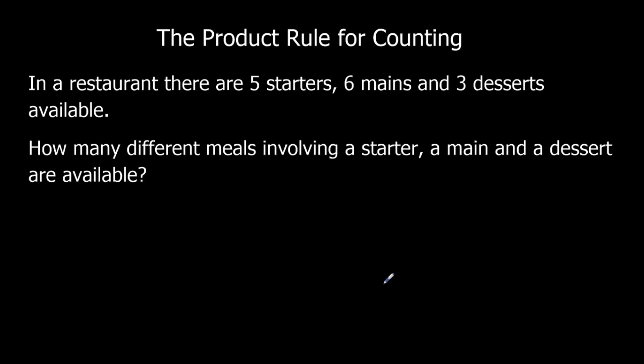So let's say there are 5 starters, 6 mains, and 3 desserts. How many different meals involving 1 starter, 1 main, and 1 dessert are available? So we're just going to times them together. So we've got 5 options, 6 options, and 3 options. So 5 times 6 that's 30, 30 times 3 is 90. So we've got 90 different options available.